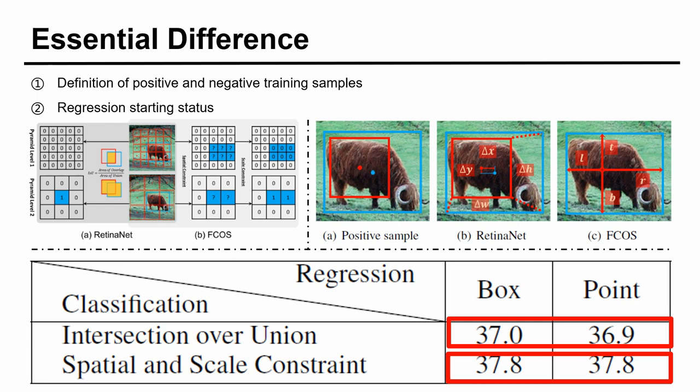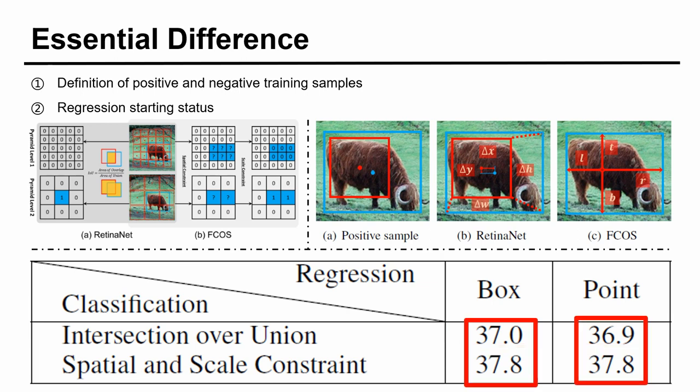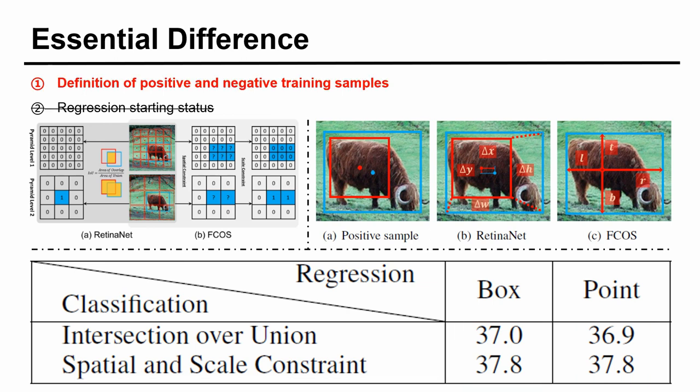When RetinaNet and FCOS use the same regression starting status and different definition of training samples, they have different results. First, the definition of positive and negative samples is an essential difference, while the regression starting status is not.